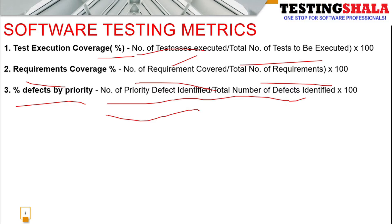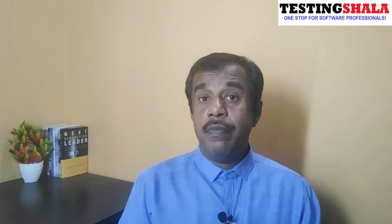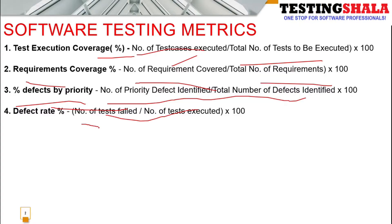The fourth metric is defect rate percentage. The formula is: total number of test cases failed divided by number of test cases executed. For example, if I execute 100 test cases and 10 fail, the defect rate is 10%.